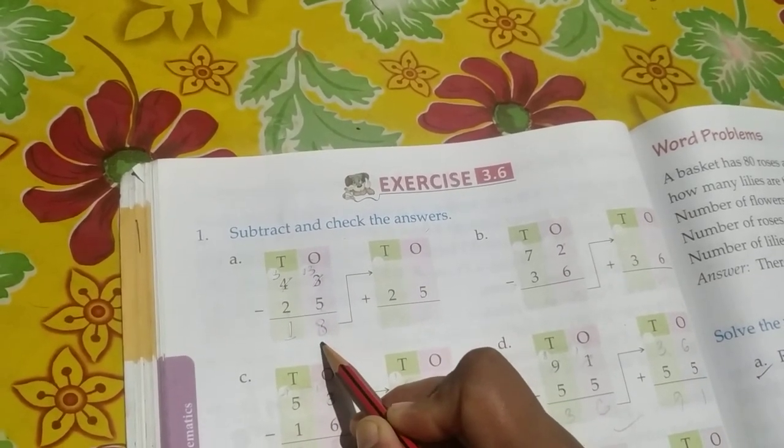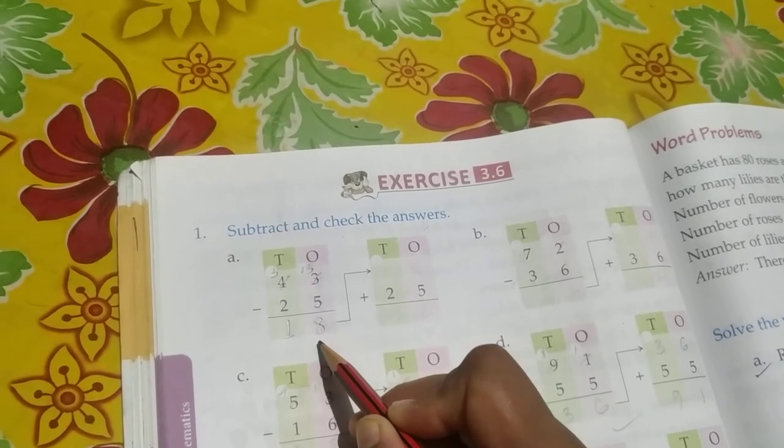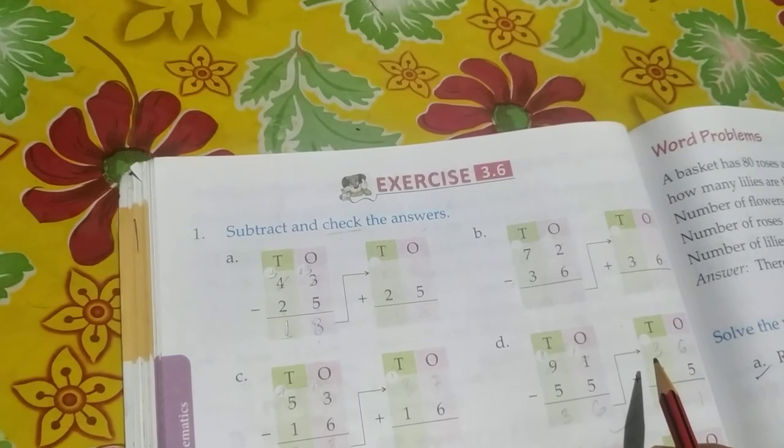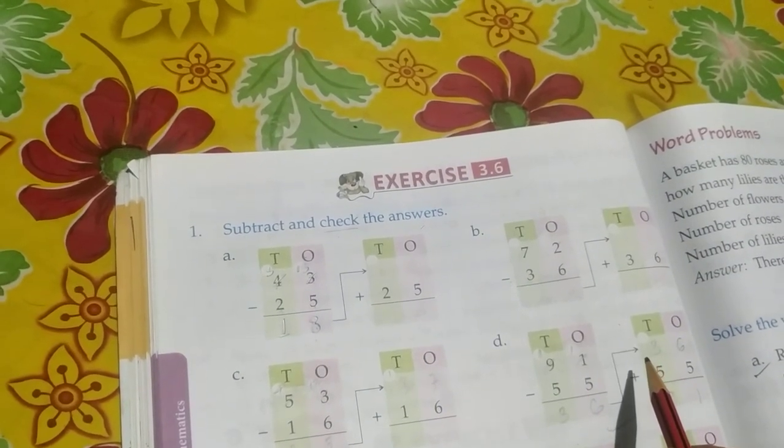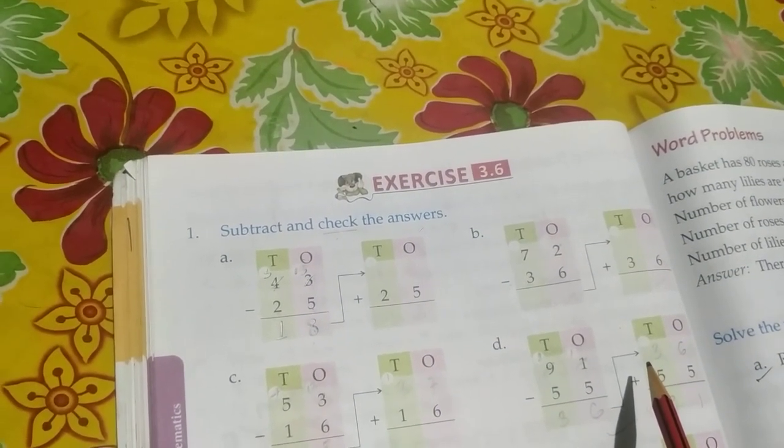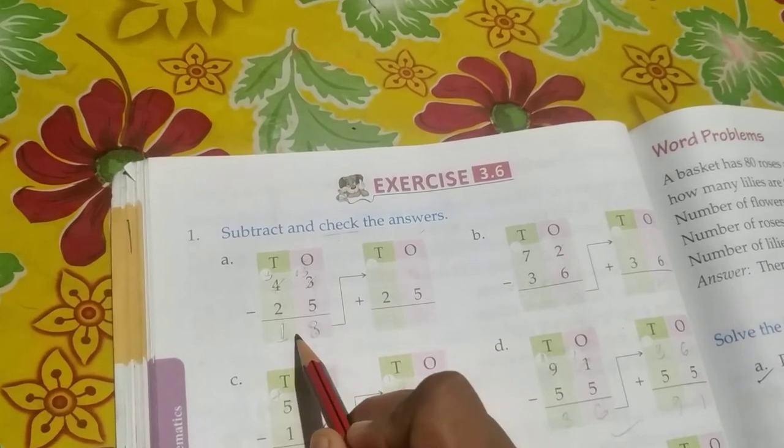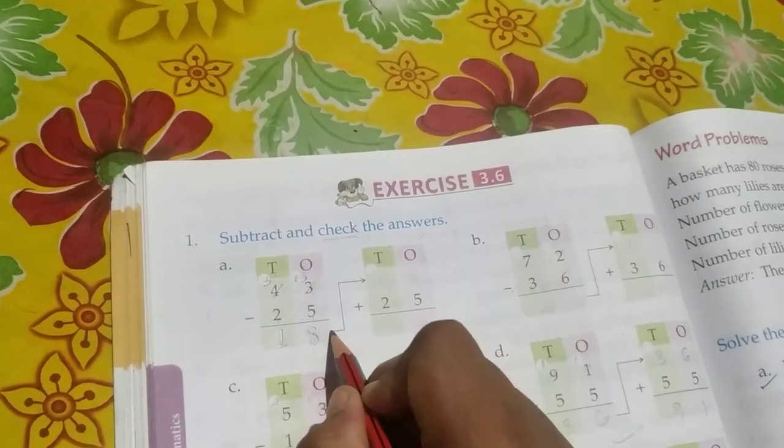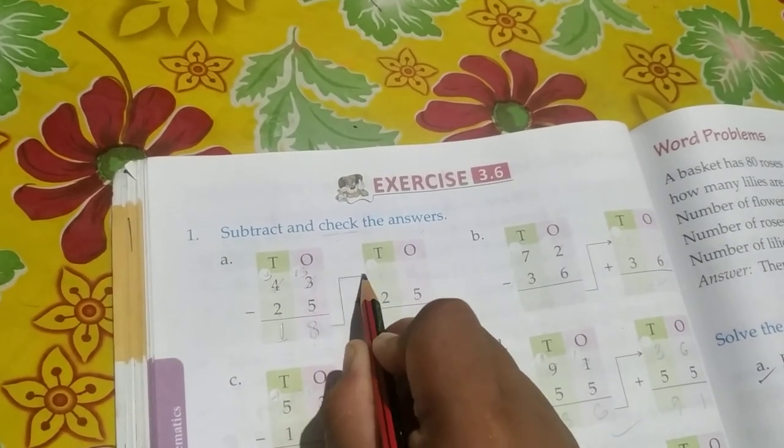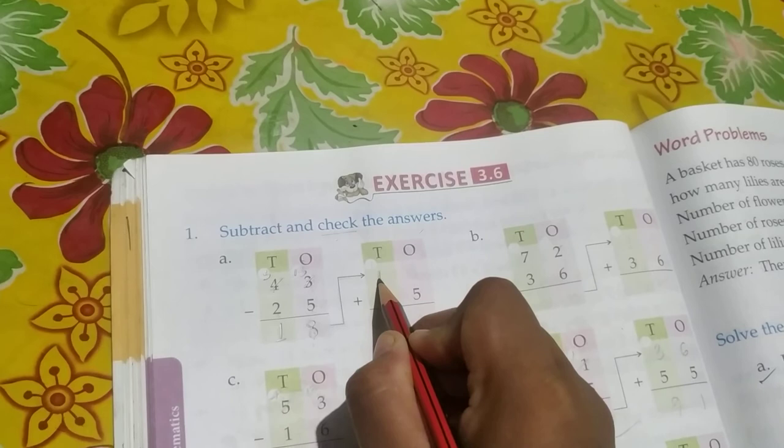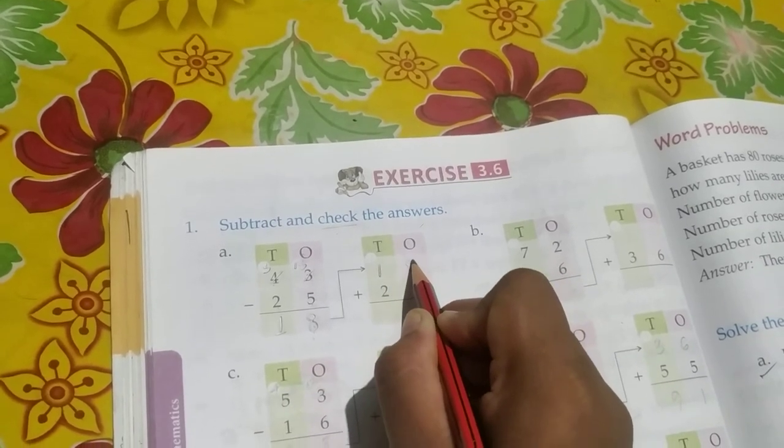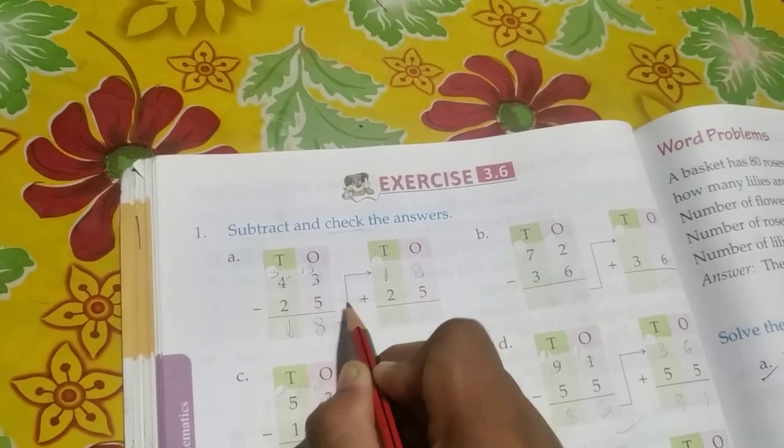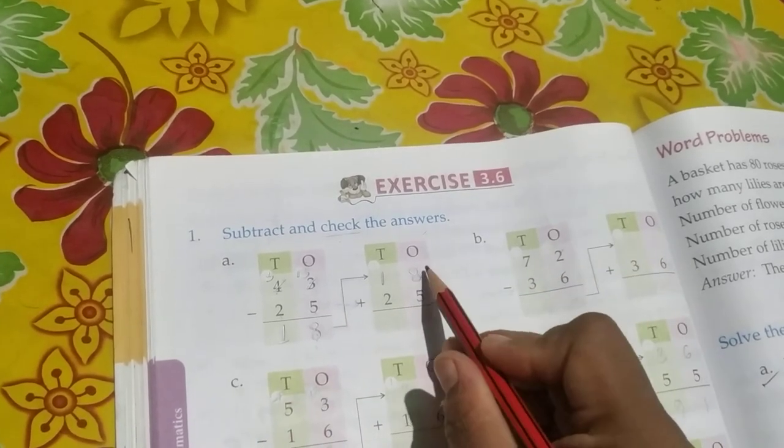For checking, we have to take this 18 on top here, and this 25 is going to be 25 here itself, and after that we have to do plus in order to get the answer.